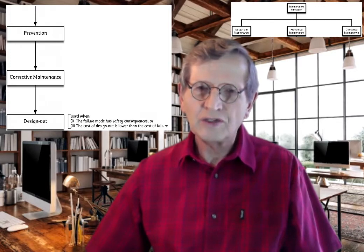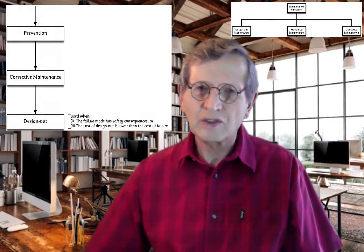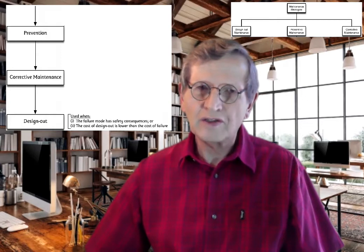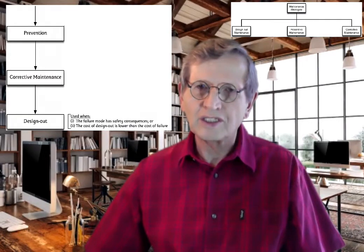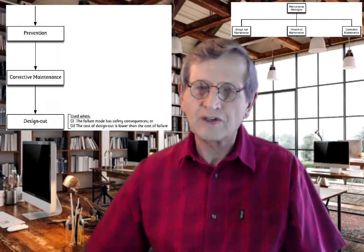This is the most conservative strategy option. If prevention is not viable technically or economically — which are the two prerequisites for choosing prevention as strategy — the default strategy is corrective maintenance, except in the case of safety-related failures. The last strategy option is design out maintenance, which will be the default strategy for safety failures and an economic choice in the case of other failures.